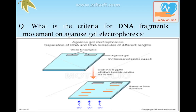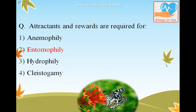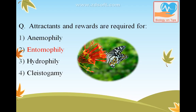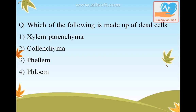Attractants and rewards are required for which type of pollination? Anemophily is pollination through air; entomophily is pollination through insects. Insects require attractants and rewards, that is why they perform pollination. Hydrophily is through water and cleistogamy involves hidden flowers with self-pollination only. So the answer is entomophily.